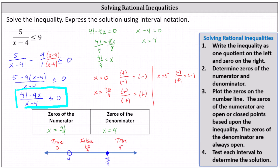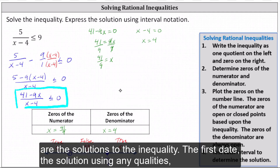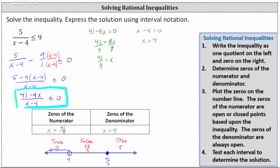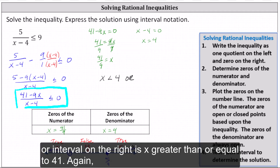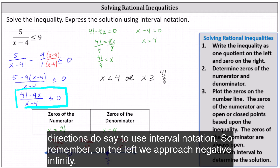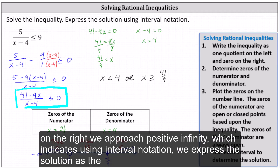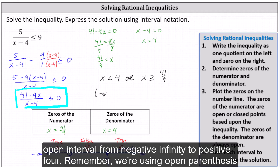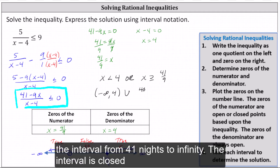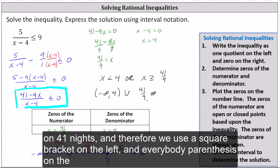The intervals on the left and right are the solutions. Using inequalities: x less than four, or x greater than or equal to 41 ninths. Using interval notation, the solution is the open interval from negative infinity to four — using an open parenthesis at four since four is not included — union the interval from 41 ninths to infinity, with a closed square bracket at 41 ninths since 41 ninths is included, and an open parenthesis at infinity.